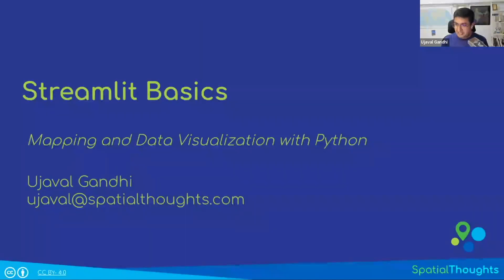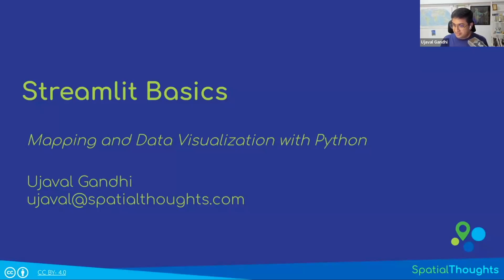This is out of reach for most data scientists. Most people who work with Python and do data science are comfortable dealing with data — we can take data, manipulate data, work with data. That's our skill set. Streamlit aims to take the skill set of somebody comfortable with data and visualization and give them a framework to create apps without knowing any front-end or backend technologies.